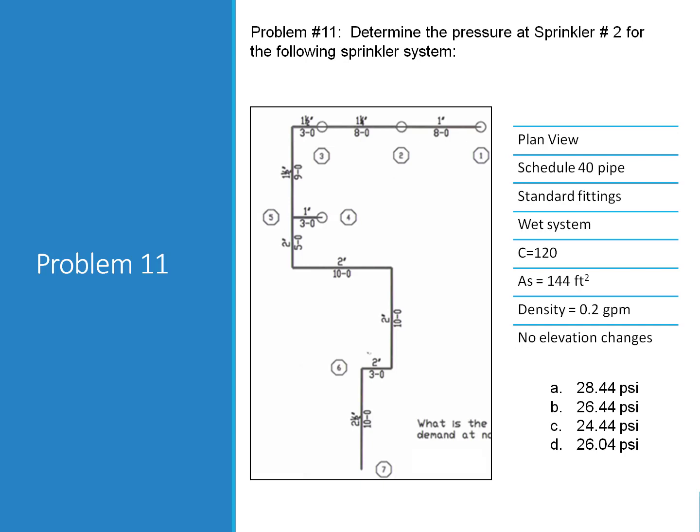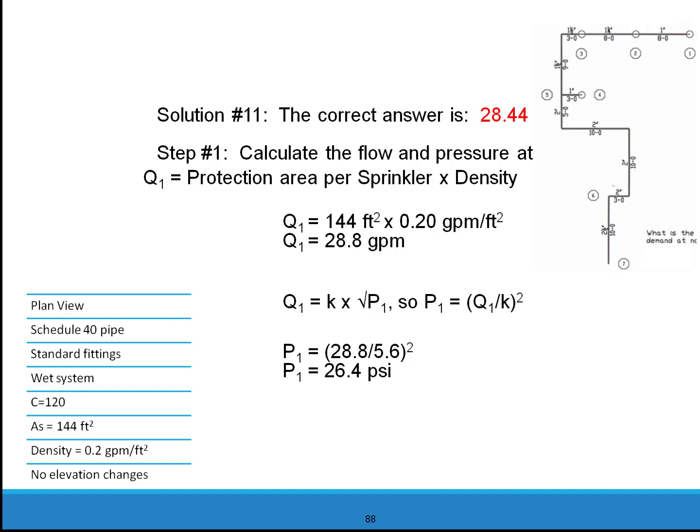Problem 11. Determine the pressure at sprinkler number 2 for the following sprinkler system. This is a plan view, Schedule 40 pipe, standard fittings, wet system. C is equal to 120. The area per sprinkler is 144 square feet. The design density is 0.2 GPMs. There is no elevation change. The correct answer for problem number 11 is 28.44 PSI.